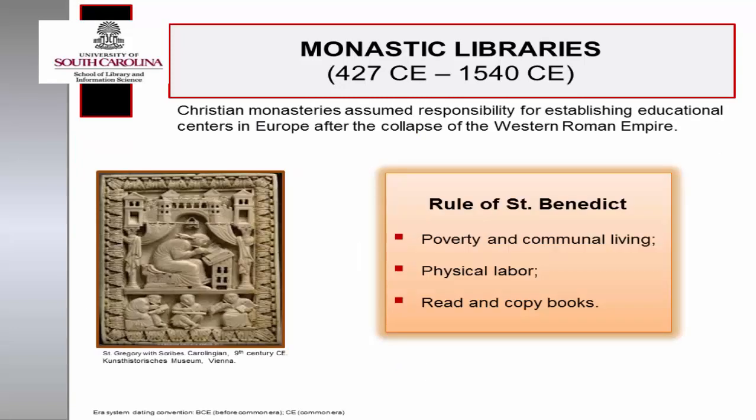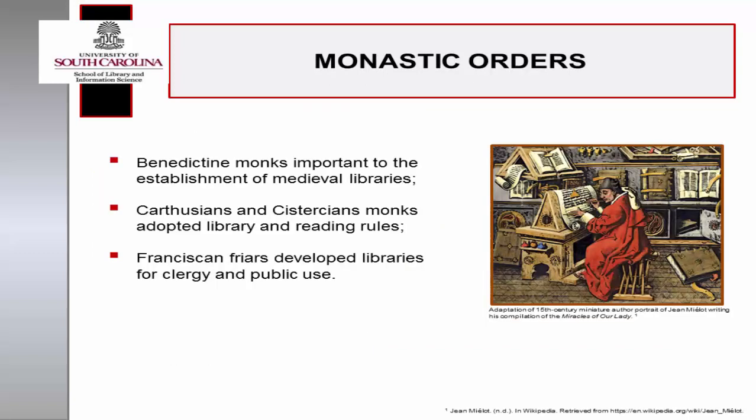Charlemagne was the first monarch to emerge and administer social reforms after the collapse of Western Europe. Recognizing the need for literacy, he called for educational reform, and monasteries assumed responsibility for establishing educational centers in the 7th to 11th centuries CE. Monastic libraries developed in the region as a result of the service of monks and monastic orders. In the Order of St. Benedict, the Rule of St. Benedict called for poverty and communal living, physical labor, reading, and manual copying of books. The Benedictine scriptoria proved to be essential to the establishment of libraries in Western Europe during this time.